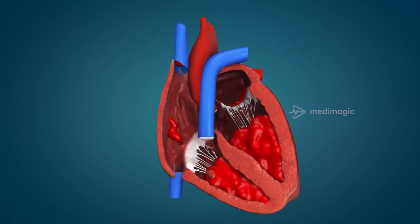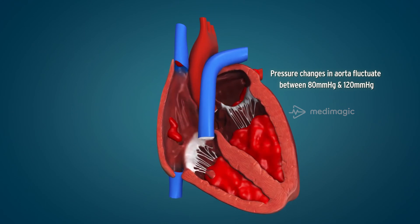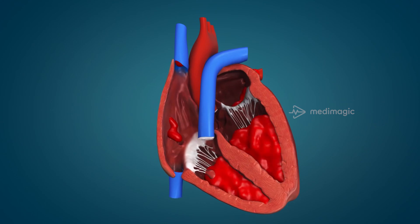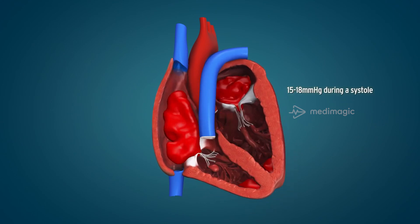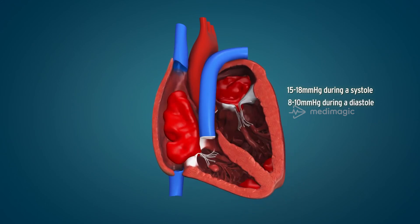The pressure changes in the aorta fluctuate between 80 mmHg and 120 mmHg during one cardiac cycle. Similarly, the pressure changes in the pulmonary artery vary between 15-18 mmHg during systole and between 8-10 mmHg during diastole.